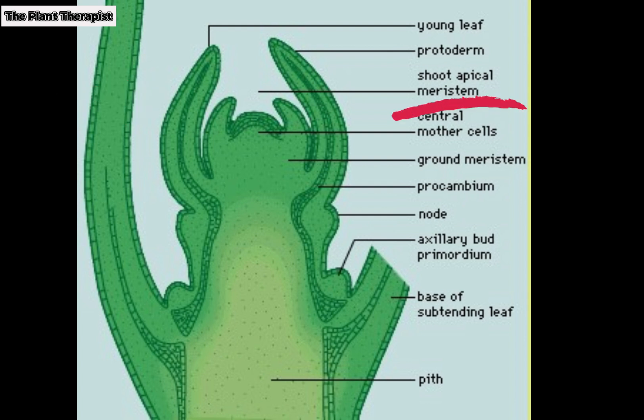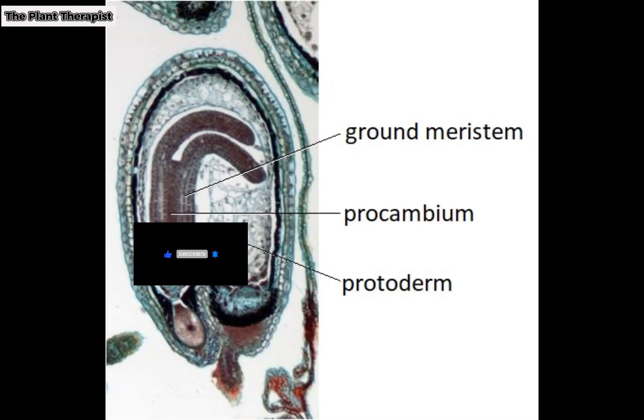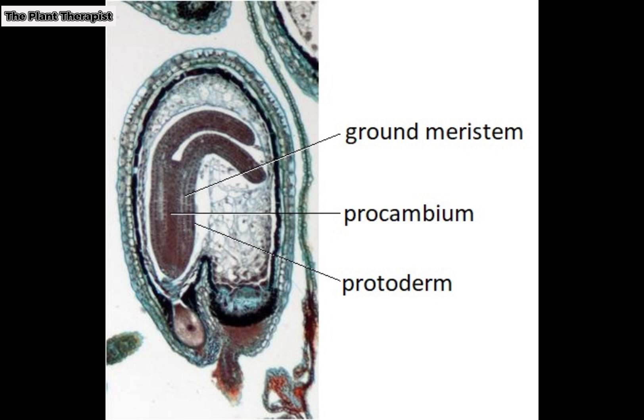After the bud scales drop off and growth begins, the apical meristem in the embryonic stem of a seed is also dormant until the seed begins to germinate. When a bud begins to expand or a seed germinates, the cells of the apical meristem undergo mitosis and three primary meristems develop from it.